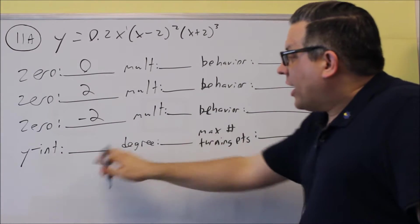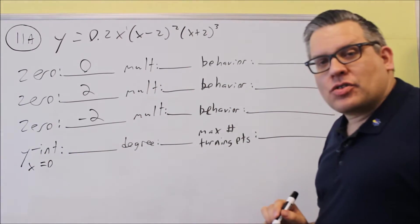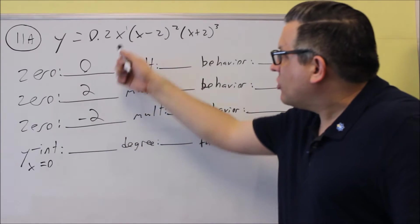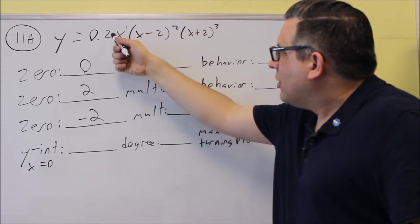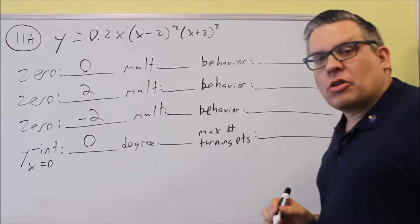For the y-intercept, the y-intercept is when you have a zero in for x. So if I plug a zero into this x right here, it'll just give me a zero for the entire thing. So I know that my y-intercept is going to be zero.